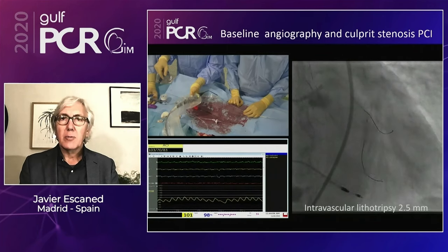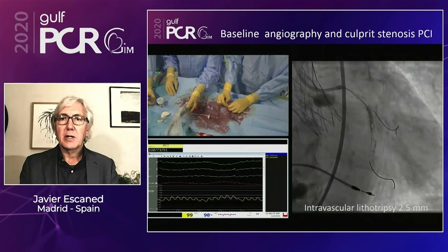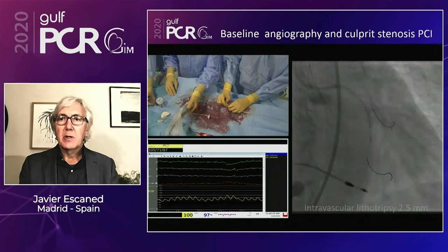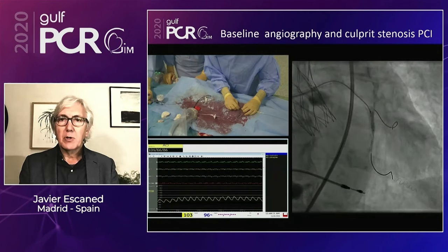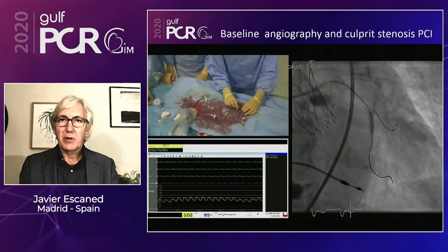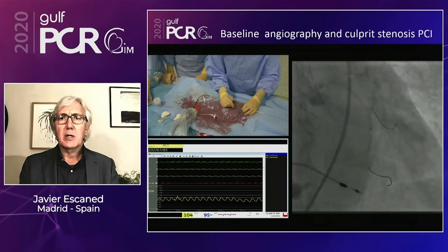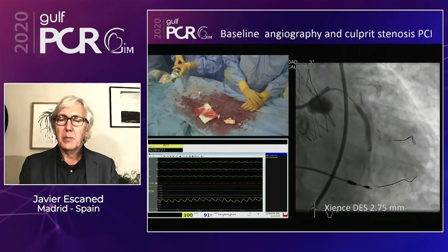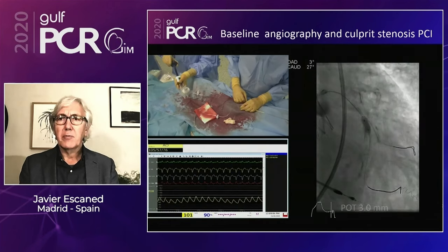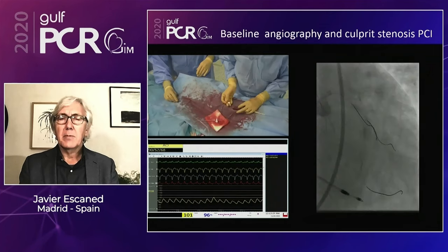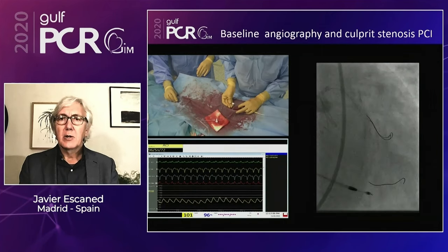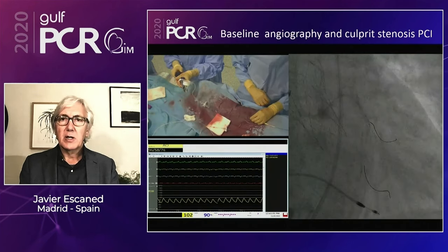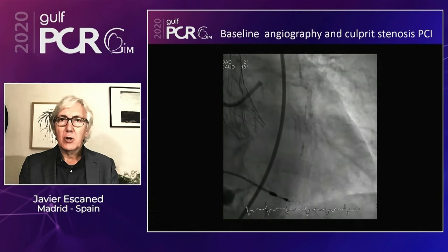Plaque preparation was performed using intravascular lithotripsy. The different hits of energy were delivered with a 2.5 IVL balloon, enabling proper preparation of the circumflex. The wire was then moved to the obtuse marginal for pre-dilation. A stent was then implanted, performing kissing balloon inflation in the proximal part, reaching a satisfactory result in this culprit lesion.